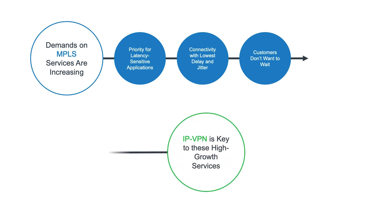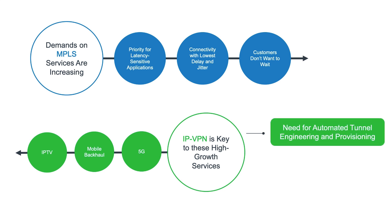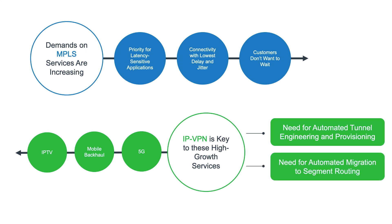In addition, IP VPN as an infrastructure construct is key to many other high-growth services, including IPTV, mobile backhaul, and 5G network slices with stringent quality of service. That will also grow the need for tunnel provisioning. There is a migration happening in many cases from RSVP-TE to segment routing tunnels, and automating that migration will be important to containing costs and maintaining margins.